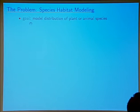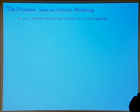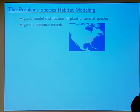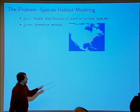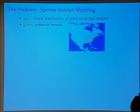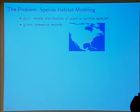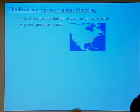Here's the problem we're interested in. The goal is to model the distribution of a plant or animal species. We're given a set of presence records — each one of these little red dots represents where a particular animal was seen. In this case, it was a bird called a yellow-throated vireo. Each dot is a location where it was observed, and those are called the presence records.